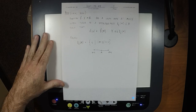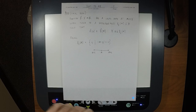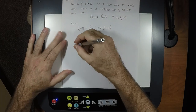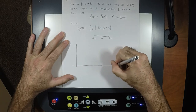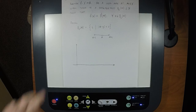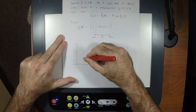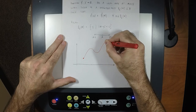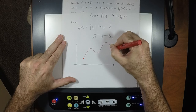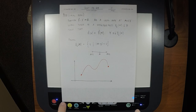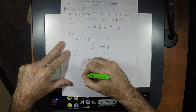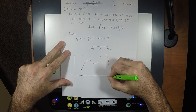Let's draw a picture of what a local max might look like. Here's a function F. In the definition of a local max, big X is the domain — all of the set down here from one end to the other.